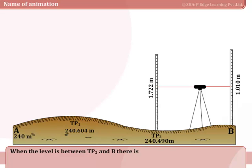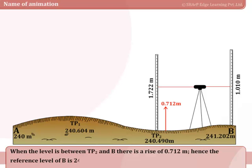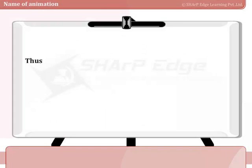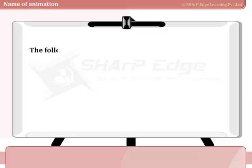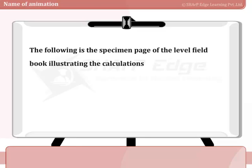When the level is between TP2 and B, there is a rise of 0.712 meters. Hence, the reference level of B is 241.202 meters. Thus, if the level of any one point is known, the level of the next will be obtained either by adding its rise or subtracting its fall. The following is the specimen page of the level field book illustrating the calculations of reduced levels by rise and fall method.